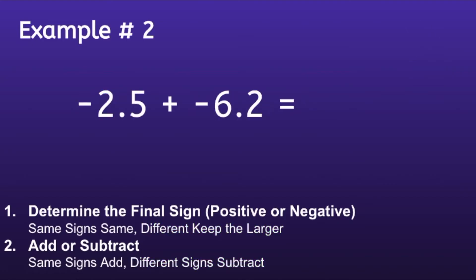Example number two: negative 2.5 plus negative 6.2. Step one: Determine the final sign. If we look at our numbers, we notice that both of the numbers are negative, so we will use 'same signs same.' Which means, since both of the numbers are negative, the solution will also be negative.